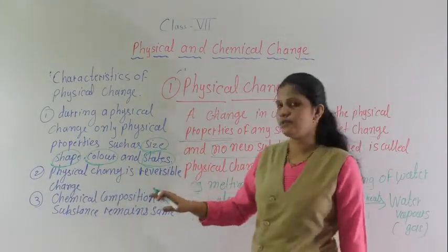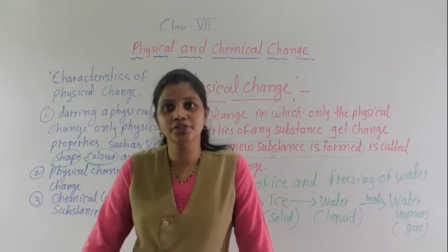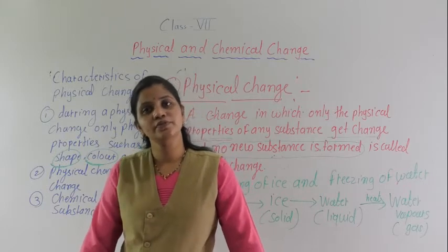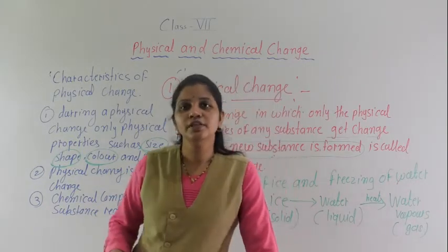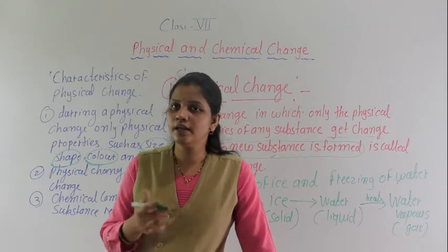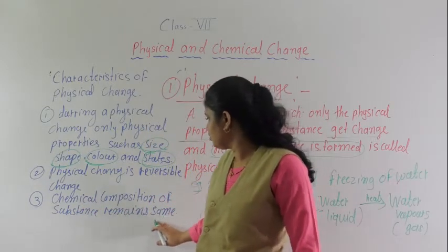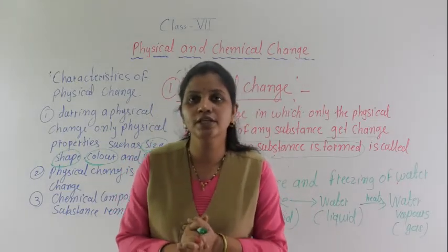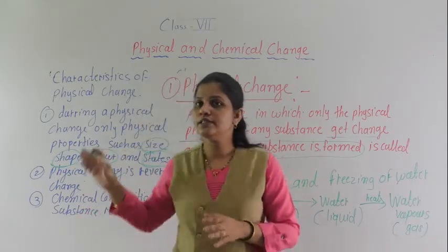The second characteristic: physical change is a reversible change. We learned about reversible and irreversible changes in Class 6. Physical change is a reversible change — meaning we will get the original substance back. It can reverse again and again; it is a reverse process. Third characteristic: the chemical composition of a substance remains the same. Whatever the chemical properties of that particular substance, they remain the same — there will be no change in the chemical properties. Then only it is a physical change.